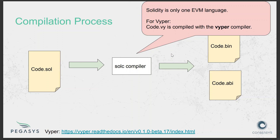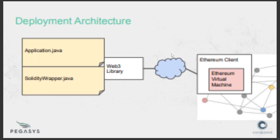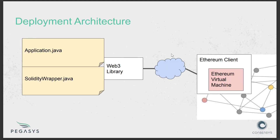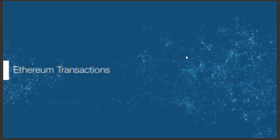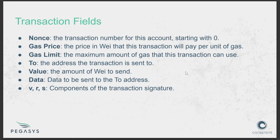Vyper is another language used for writing smart contracts as well. Whenever we send a transaction to the blockchain, the transaction contains several fields that describe what the transaction is doing — who it's coming from, where it's being sent to, and so on.